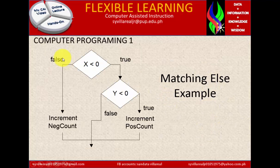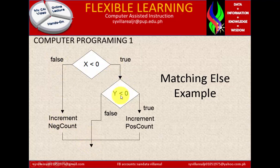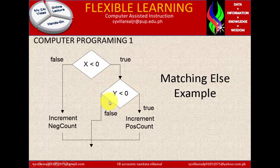Matching else example. x is less than 0 — if false, increment negation count, then increment pos count, then go to end. If true, go to another decision: y is less than 0. If false, end. If true, increment pos count. It's better to put many decisions just in case it is true, because that is verifying under the data law.